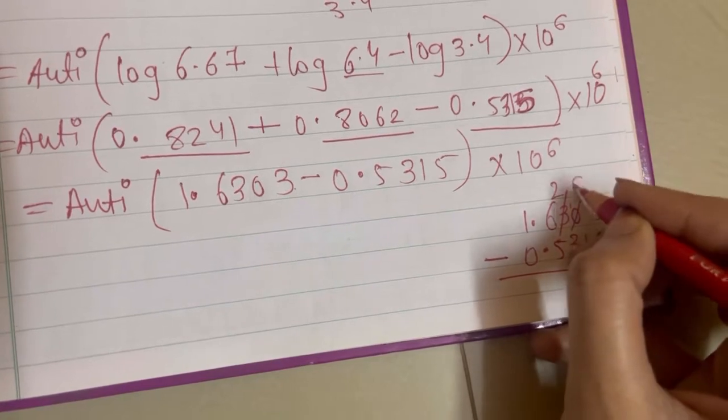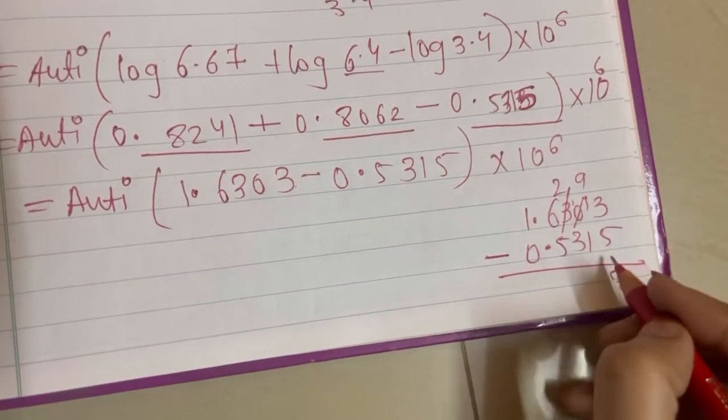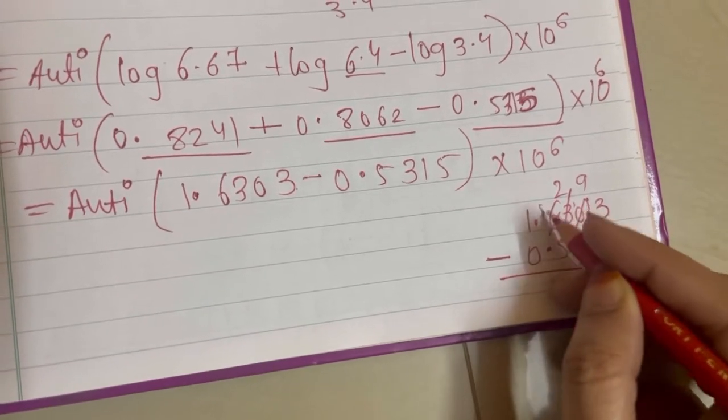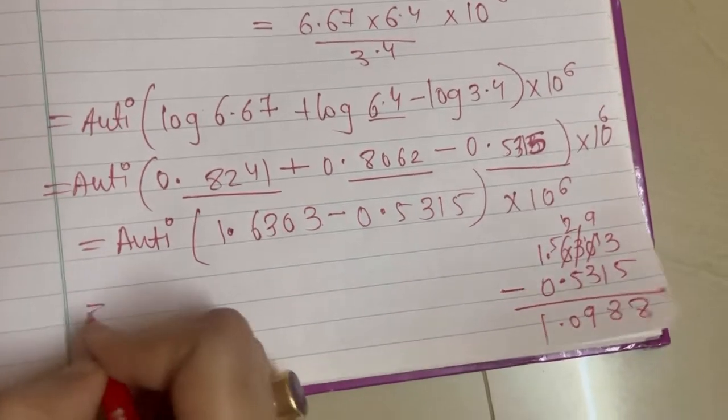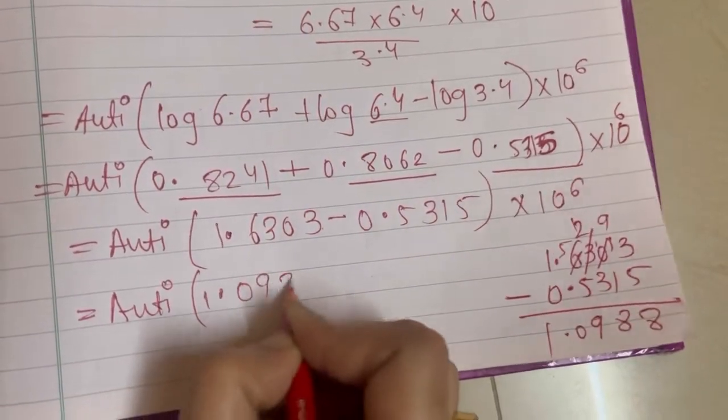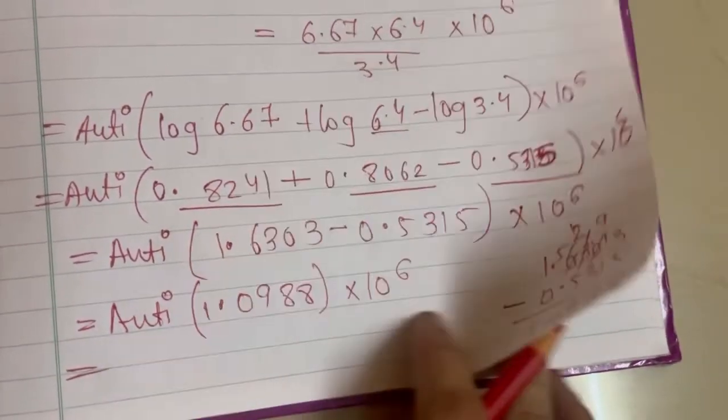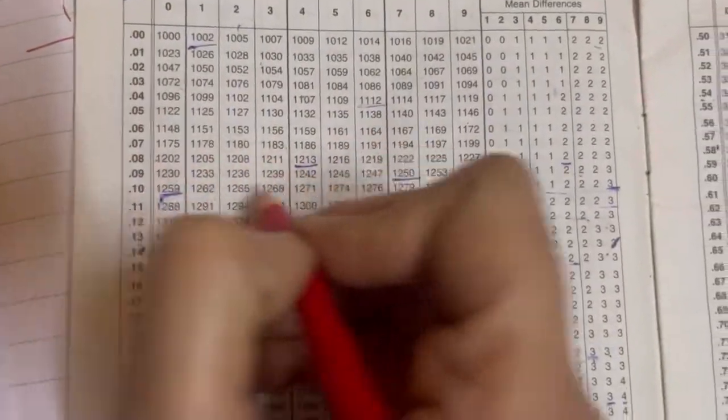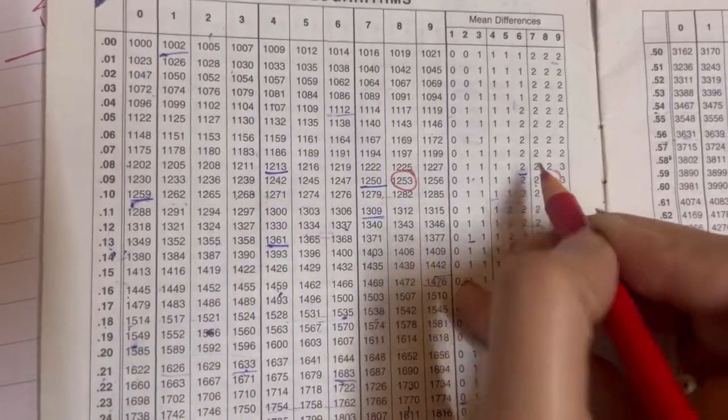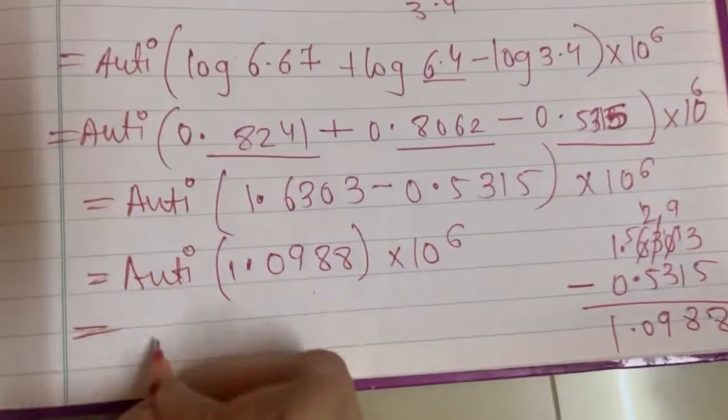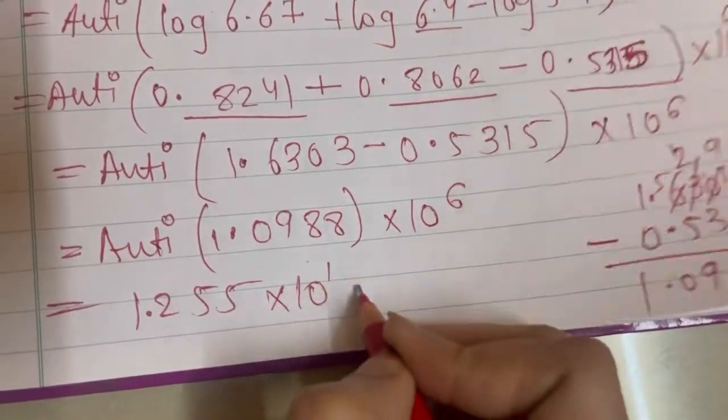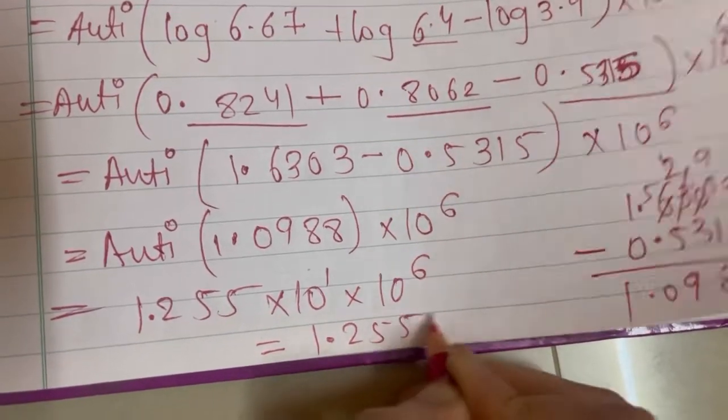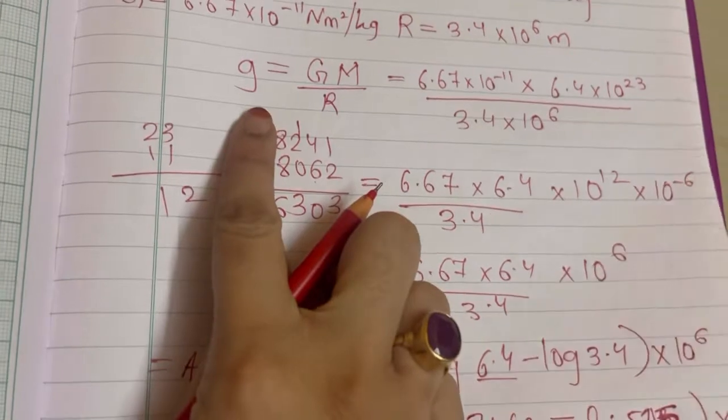Subtracting 1.6303 minus 0.5315 gives us 1.0988. Taking antilog of 1.0988: we find 1255, which is 1.255 × 10⁷ m/s². Wait, we made a mistake in the formula.